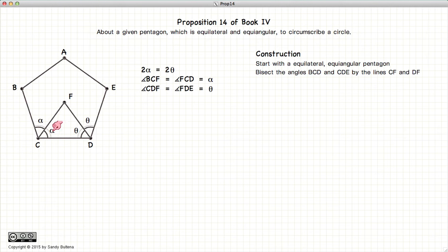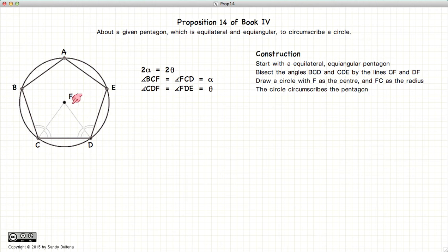We bisect the angles c and d and where the lines intersect we label that point f. We draw a circle with f as the center and fc as the radius. And thus this circle passes through all the vertices of the pentagon.